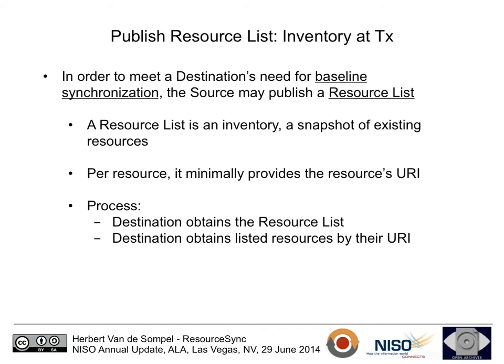In order to allow a destination to perform an initial baseline synchronization, the source can publish a resource list. That resource list is basically an inventory — a snapshot of the resources that exist at the source at a specific moment in time. Such a resource list will, per resource, minimally list the resource's URI. The process consists of the destination discovering where the resource list is, obtaining and parsing it, and for each URI listed, dereferencing it to obtain a representation of the associated resource.